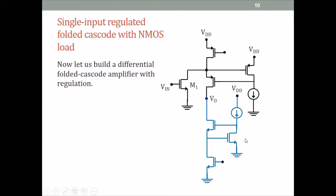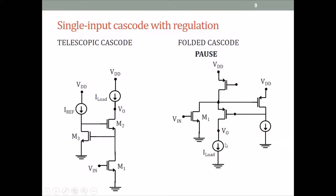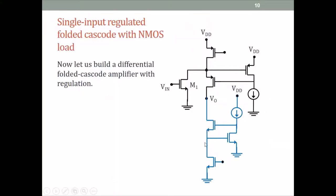The blue part is the load. We have replaced the I-load with an NMOS regulated cascode load. This is a single-input folded cascode amplifier with regulation. Now, let us build a differential amplifier with this. For differential, we need two such circuits — mirror images of each other — and then we put the input transistors together.